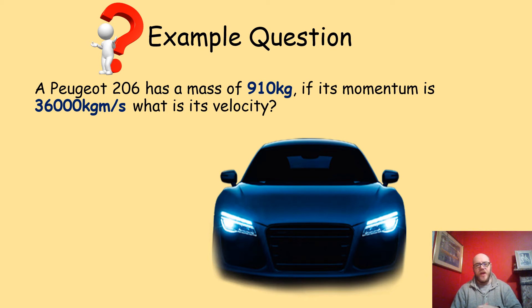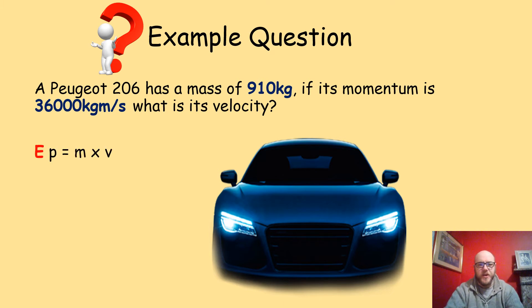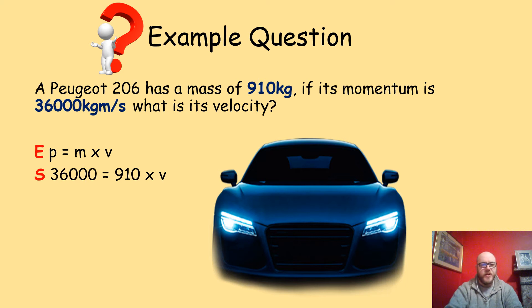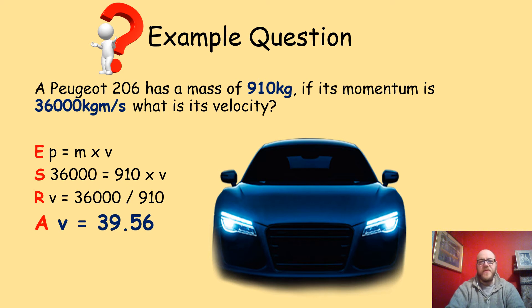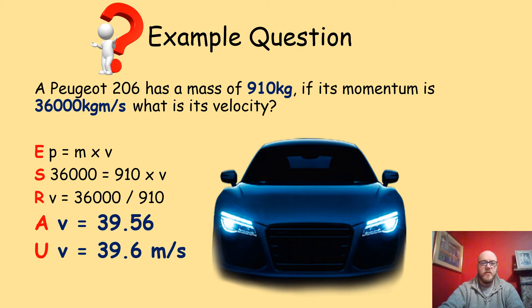Back to my Peugeot 206 — still 910 kilograms mass, but its momentum is now 36,000 kilograms meters per second. Can you work out its velocity? Using SROE: equation is P equals MV. Substituting: 36,000 equals 910 kilograms multiplied by the unknown velocity. The unknown is not the subject, so we rearrange — divide both sides by 910. V equals 36,000 divided by 910, which gives 39.56 — so the answer is approximately 39.6 meters per second.